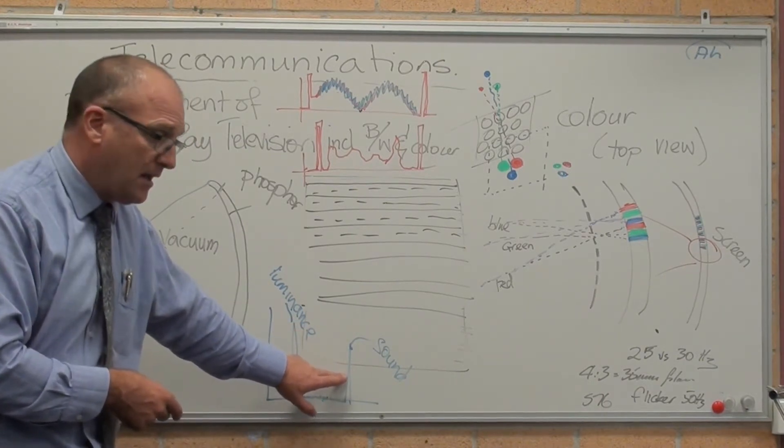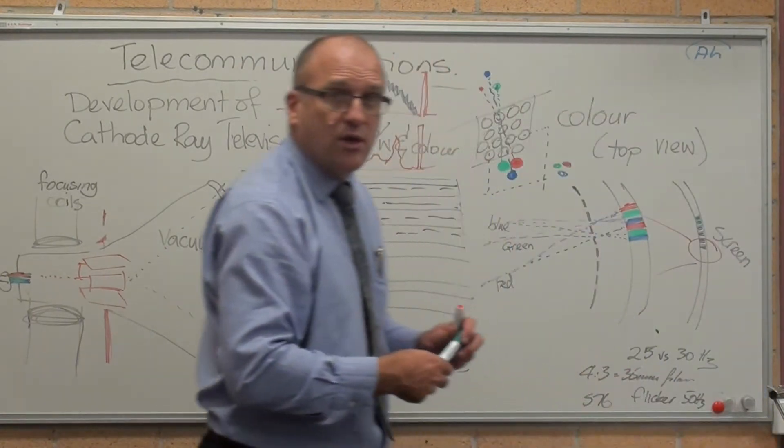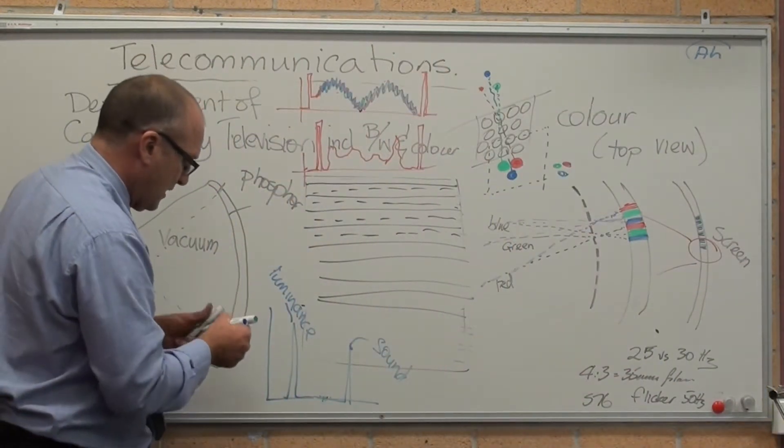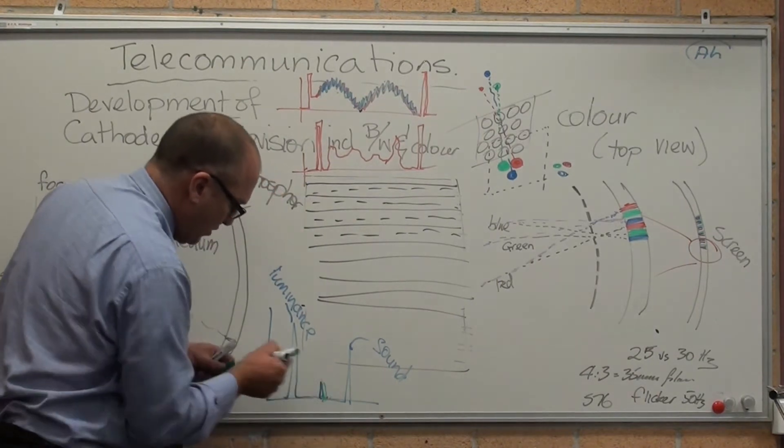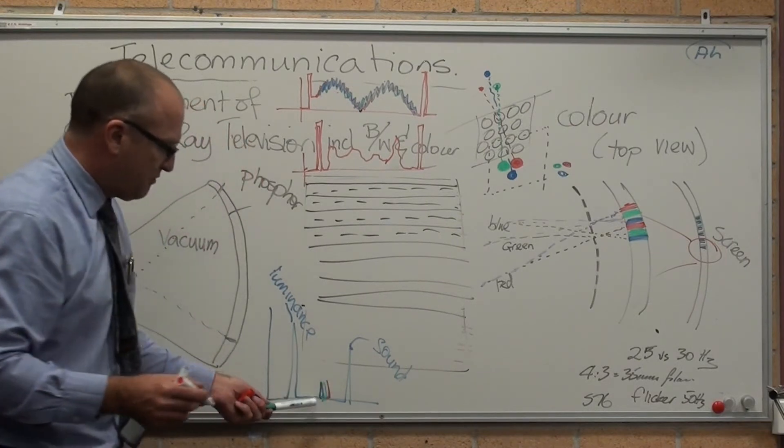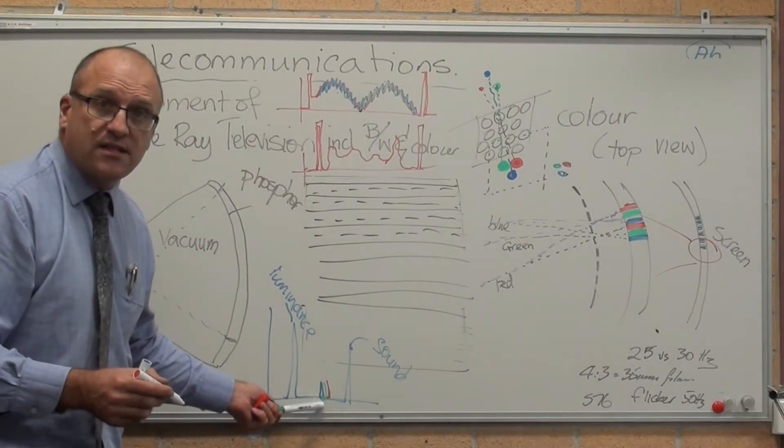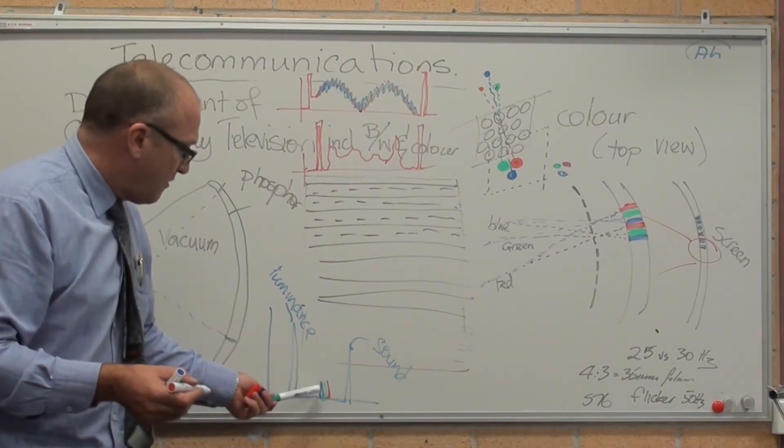Along came colour television, and you needed to incorporate colour into it. So they transmitted, once again, looking at the frequency band, three separate sub-frequencies showing the red, green, and blue.